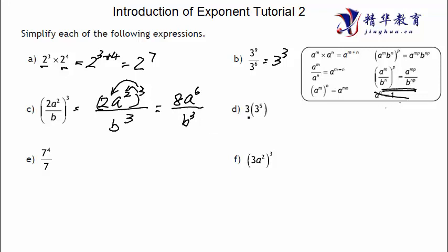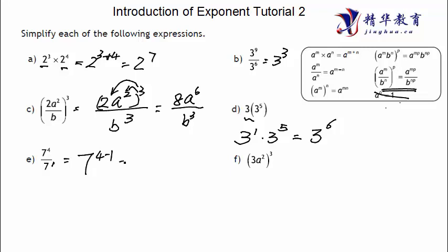Next, three times three to the power of five. Three is three to the power of one, so power times power equals power added: one plus five equals three to the power of six. Then seven to the power of four divided by seven — seven is seven to the power of one — power divided by power equals power subtracted: four minus one equals seven to the power of three.